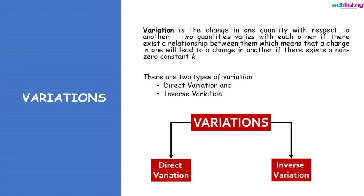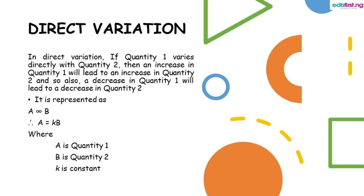There are two types of variation: direct variation and inverse variation. In direct variation, if quantity one varies directly to quantity two, then an increase in quantity one leads to an increase in quantity two, and a decrease leads to a decrease. It is represented as: a varies directly to b, therefore a equals kb, where a is quantity one, b is quantity two, and k is the non-zero constant.